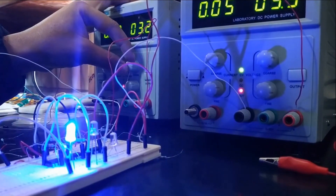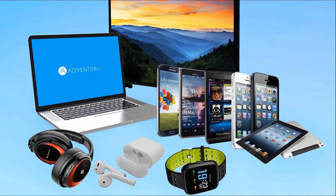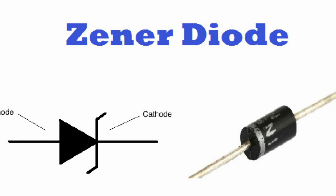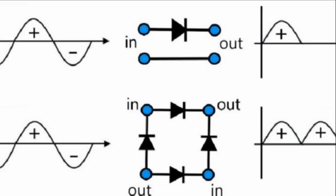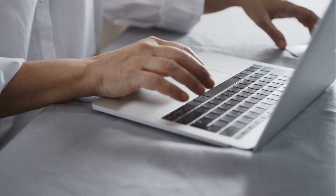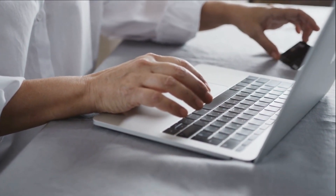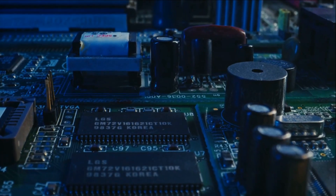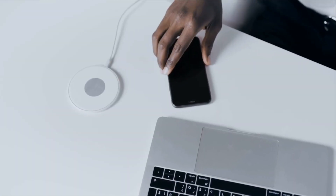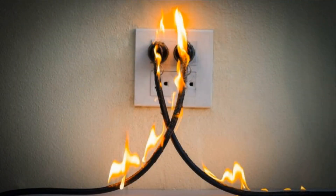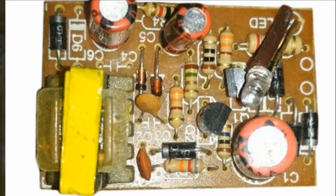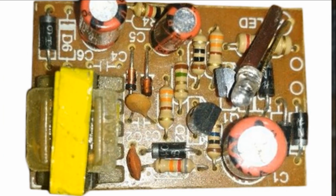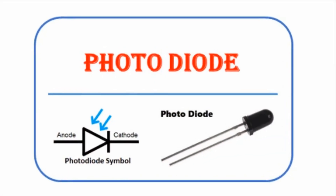Then there's voltage regulation. For all those electronic devices around you, stable voltage is a must. Enter Zener diodes — the guardians of voltage regulation — ensuring your devices are never overwhelmed by an unexpected surge in voltage. Diodes also offer over-voltage protection. Picture this: you're charging your phone and there's a sudden power surge. The diode in your charger acts as a gatekeeper, blocking the excess voltage and protecting your precious device from potential harm.